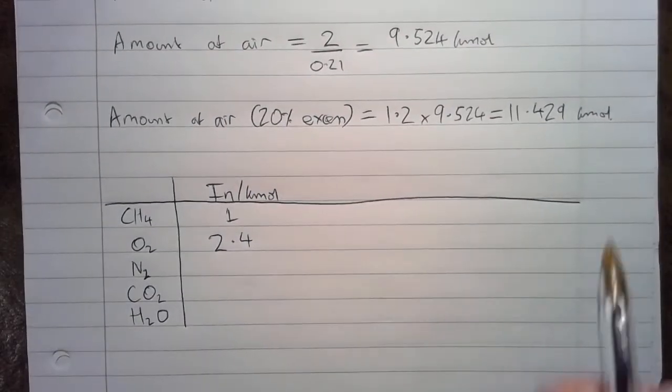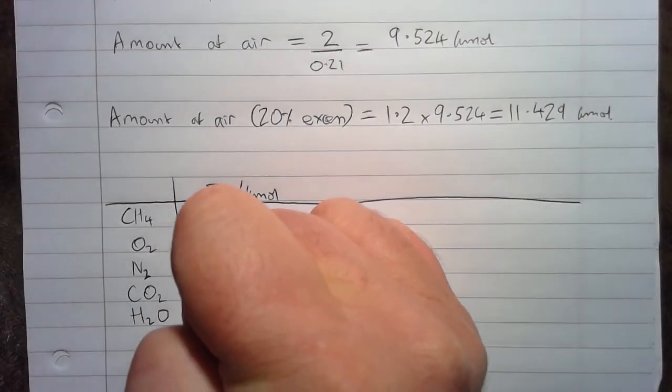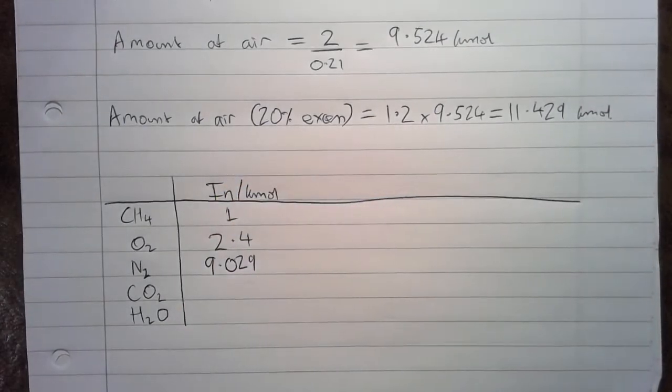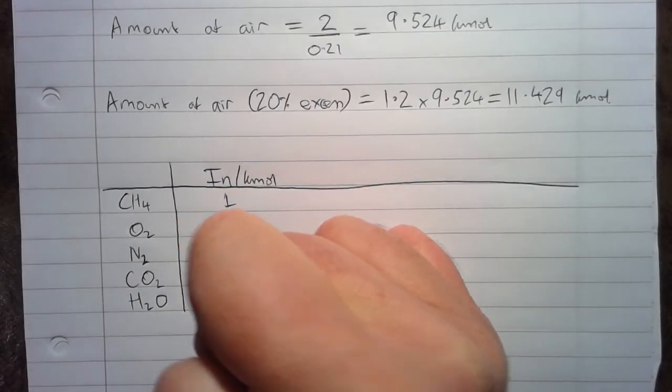And if we multiply this number by 0.79, we'll find that we've got 9.029 kmoles of nitrogen going in. The CO2 and the H2O going in are both 0.